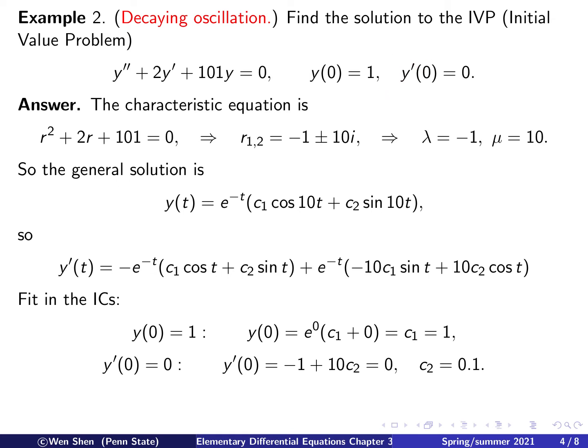Since the initial condition involves y prime, let's work that out using the product rule, as we have an exponential times a sine-cosine term. Differentiating gives a −e^(−t) times [c1·cos(10t) + c2·sin(10t)] term, plus e^(−t) times [−10c1·sin(10t) + 10c2·cos(10t)].